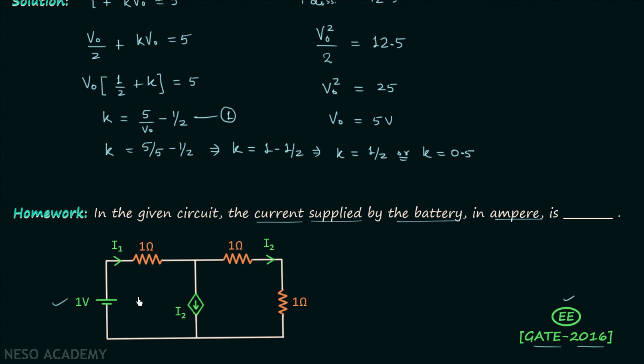And you can see that there is one battery here, and you need to find the current supplied by this battery, that is i1.